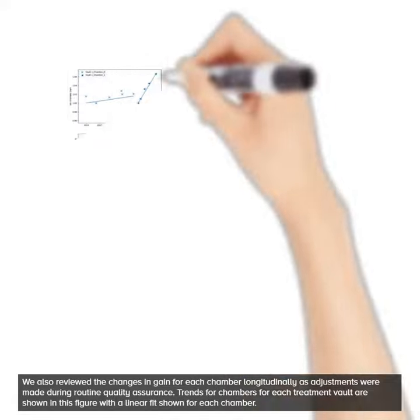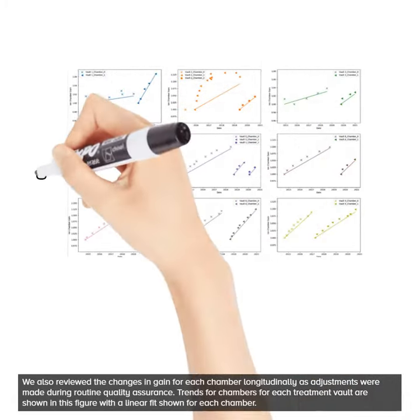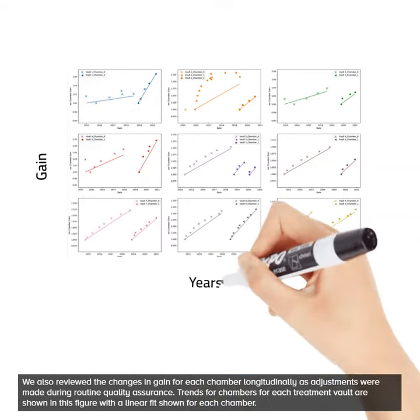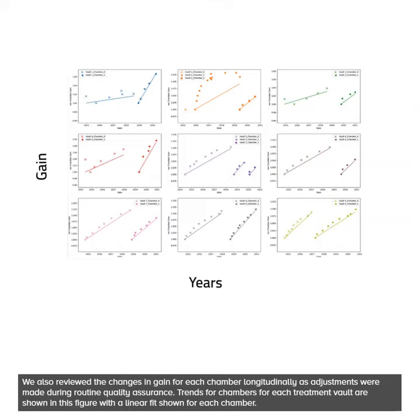We also reviewed the changes in gain for each chamber longitudinally as adjustments were made during routine quality assurance. Trends for the chambers for each treatment vault are shown in this figure with a linear fit shown for each chamber.